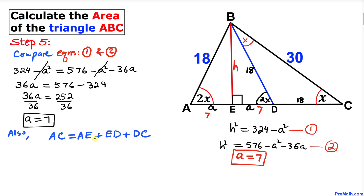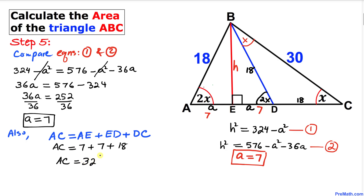Now let's find side length AC. AC = AE + ED + DC. AE is 7, ED is 7, and DC is 18.